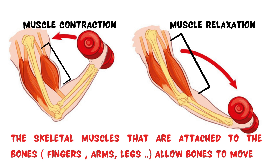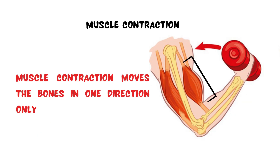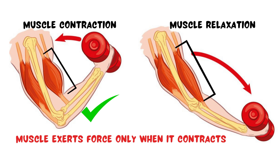The skeletal muscles are attached to the bones — in the fingers, arms, and legs — to make the bones move. Muscle contraction moves the bones in one direction. When the muscle in the front of the upper arm contracts, it moves the forearm toward the shoulder in one direction. Also, muscles exert force only when contracting. Contracts means to decrease in size.